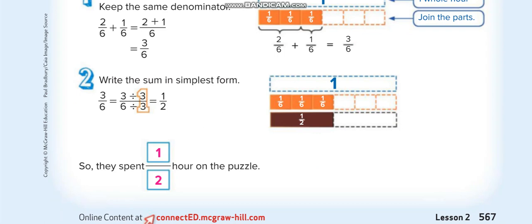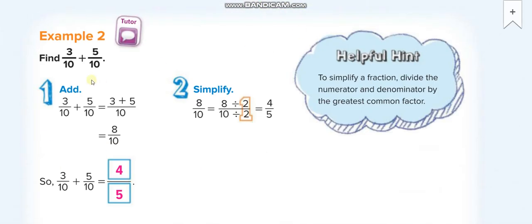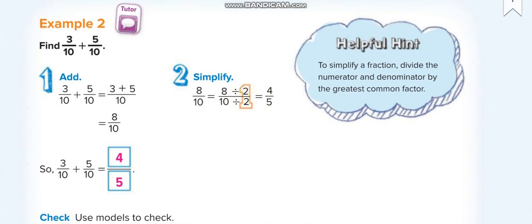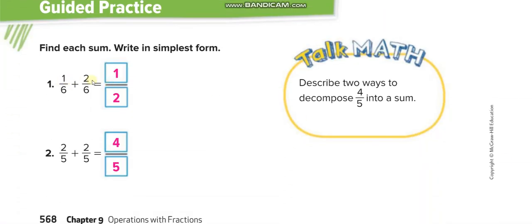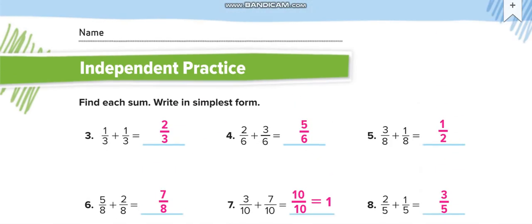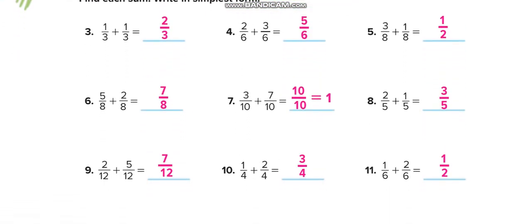On the next page, 3 over 10 plus 5 over 10 equals 8 over 10. To simplify, divide by 2 up and down: 8 divided by 2 is 4, and 10 divided by 2 is 5, giving 4 over 5. Similarly, 1 plus 2 equals 3 over 6 — divide by 3 to get 1 over 2. And 2 plus 2 equals 4 over 5.